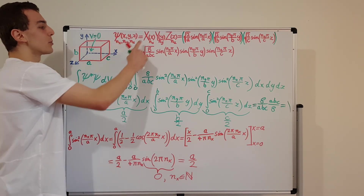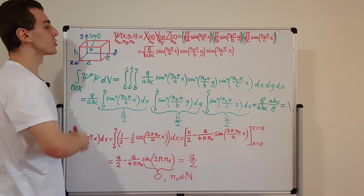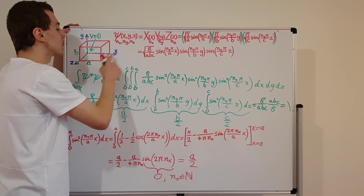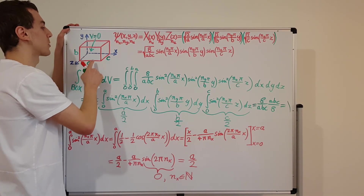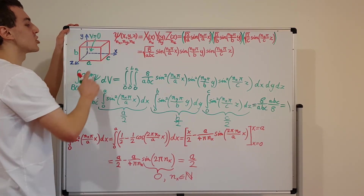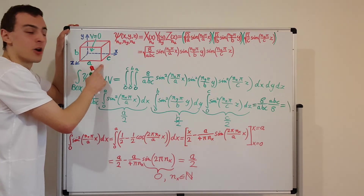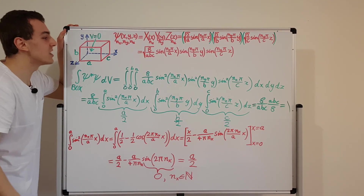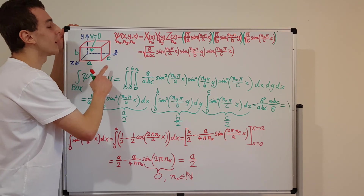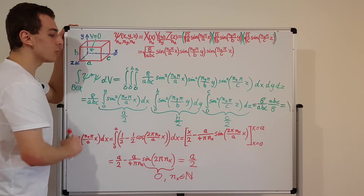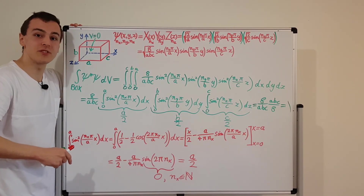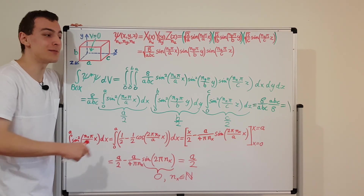We've verified normalization. You can now take linear superpositions — also known as superpositions — of all these stationary-state wave functions to describe any possible wave function for a particle in a 3D box. You can also try solving this problem with different box shapes, such as a cylinder or a sphere, which would require different coordinate systems that are far more convenient for those geometries. Hopefully this video is helpful — watch the quantum mechanics playlist for more videos.